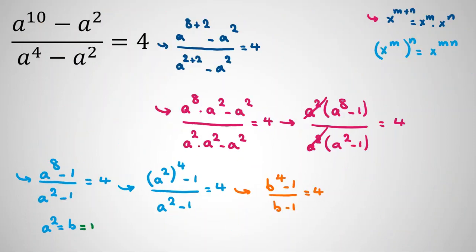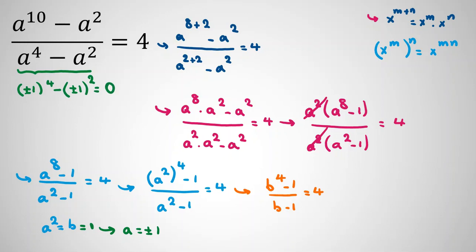Since b = a², b = 1 gives a = ±1. However, if a = ±1, the denominator becomes (±1)^4 - (±1)² = 1 - 1 = 0. So the denominator is zero, which is undefined. Therefore there is no real number solution.